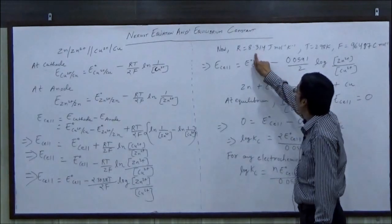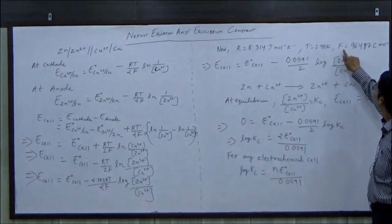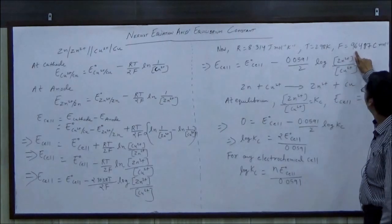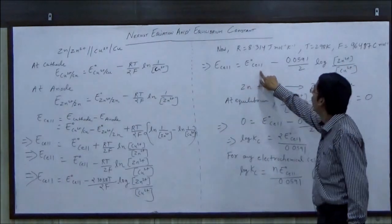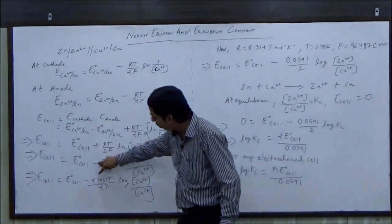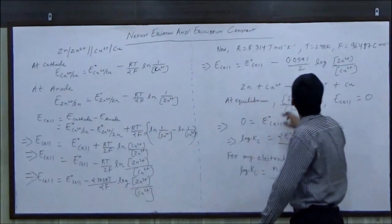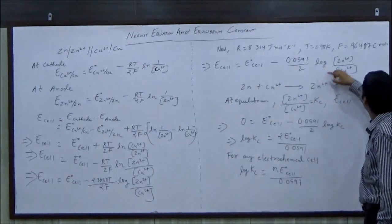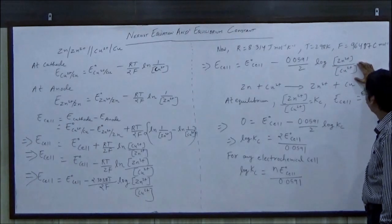Now we know that R is equal to 8.314, temperature is equal to 298 Kelvin, value of Faraday is equal to 96487 coulomb per mole. So E cell becomes equal to E0 cell minus the value of this quantity 2.303 RT by F is equal to 0.059, 1 upon 2 log concentration of Zn2+ upon concentration of Cu2+.